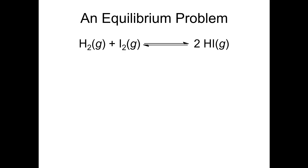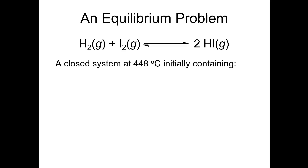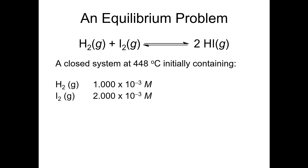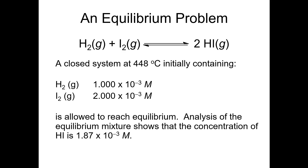We have an equilibrium in which hydrogen and iodine react to give hydrogen iodide. Here's the balanced equation and the data: we have a closed system at 448°C. The initial concentration of H₂ is 1×10⁻³ M, the initial concentration of I₂ is 2×10⁻³ M, and the initial concentration of HI is zero. At equilibrium, the concentration of HI is found to be 1.87×10⁻³ M.